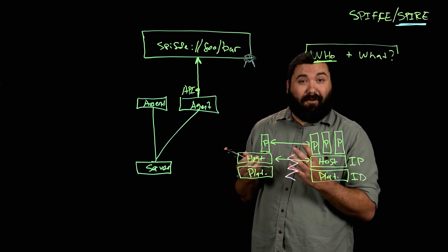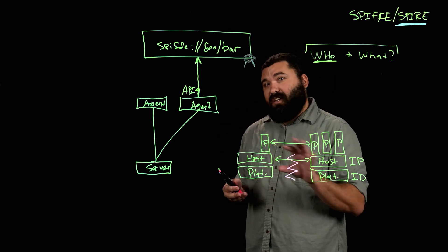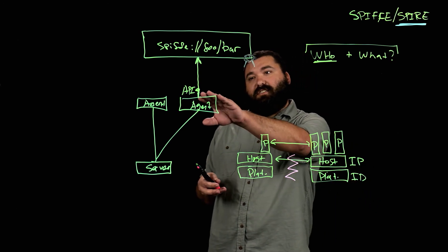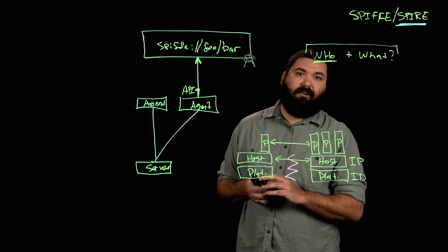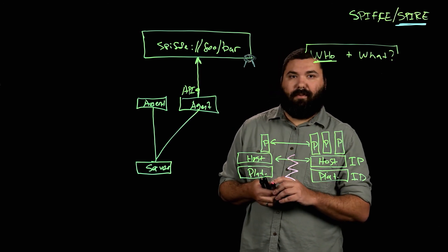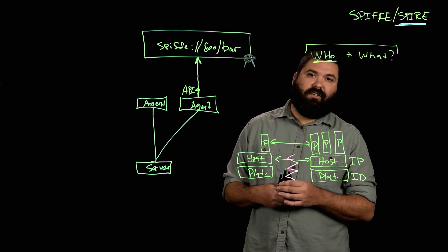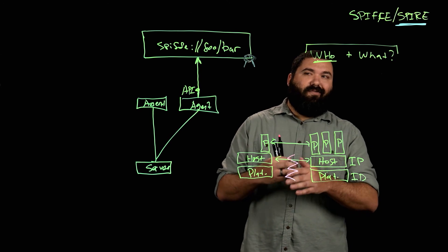Finally, and maybe the coolest part, is that all the keys in this system are all short lived. And because this workload API has a push mechanism, we can rotate them very rapidly. We can revoke them very rapidly and all sorts of cool things like that.